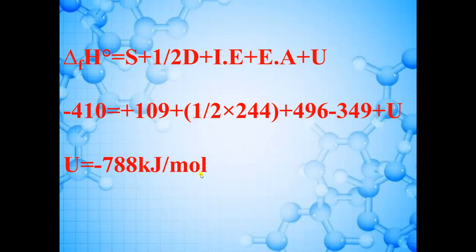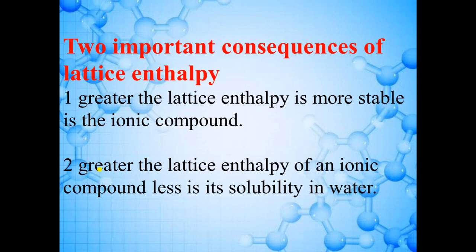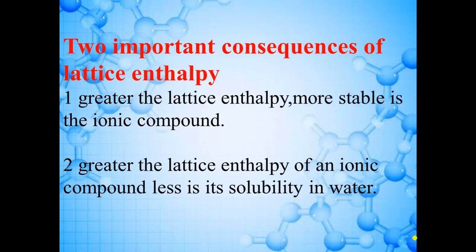We will now move to the next topic: entropy. Entropy is a measure of randomness or disorder of the system. For example, if one container has gaseous particles moving with very fast speed and another has molecules moving very slowly, the container with fast-moving particles has more randomness. In the diagram showing three states — solid, liquid, and gaseous — particles in solid state are fixed and not moving.